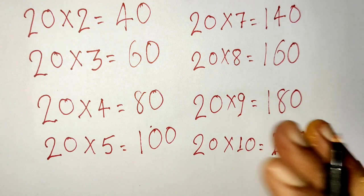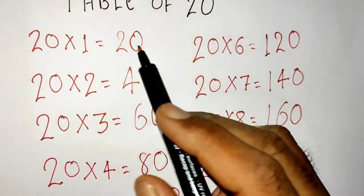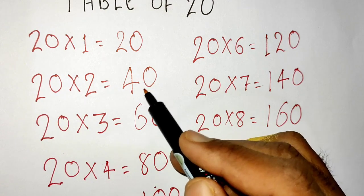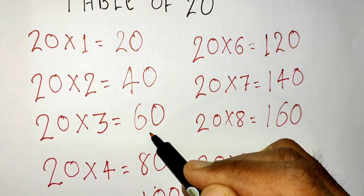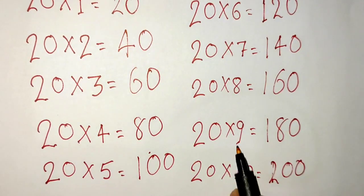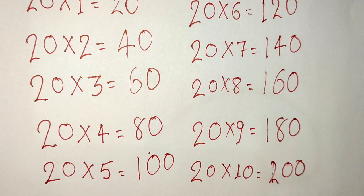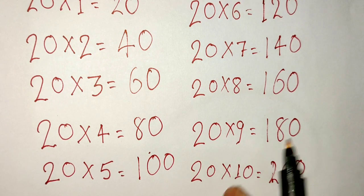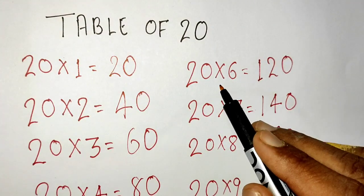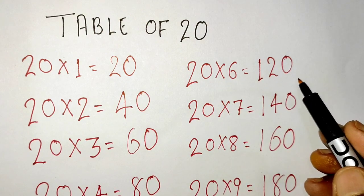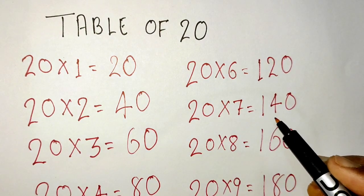20x1=20, 20x2=40, 20x3=60, 20x4=80, 20x5=100, 20x6=120, 20x7=140.